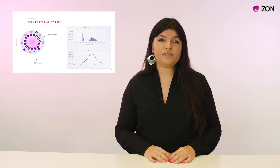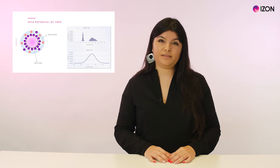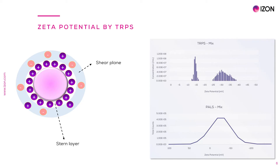TRPS provides results that are unbiased from size. In this graph, we show that TRPS can resolve a particle mixture of 1-to-1 of 400 nm charged carboxylated polystyrene CPCs, as shown on the right of the graph, versus 400 nm bare polystyrene CPNs on the left of the graph. In contrast, PALS cannot resolve these two populations.